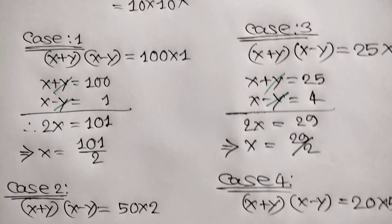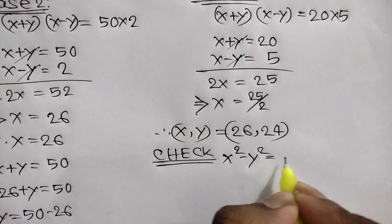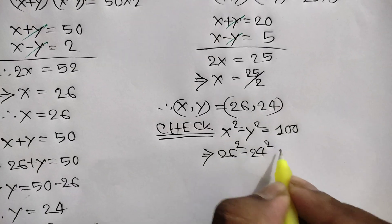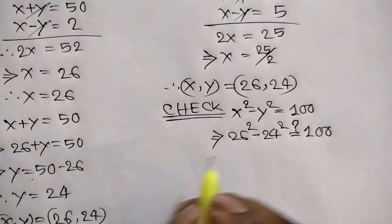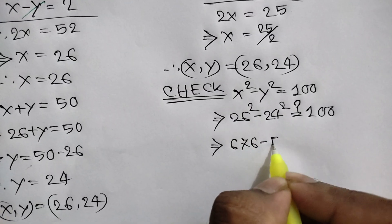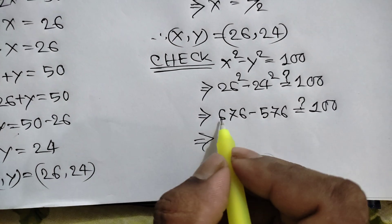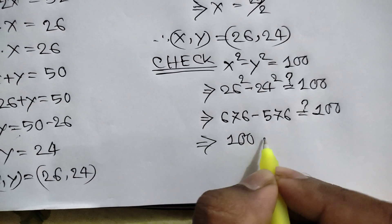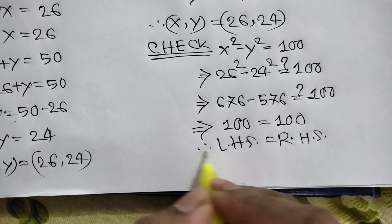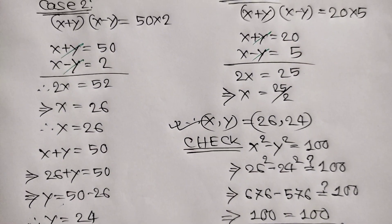Verification: our equation is x squared minus y squared equals 100. With x equals 26 and y equals 24, we get 26 squared minus 24 squared, that is 676 minus 576, which equals 100. So left hand side equals right hand side, confirming the solution is correct. Thanks for watching — if you like this video please subscribe to my channel, see you in the next video.